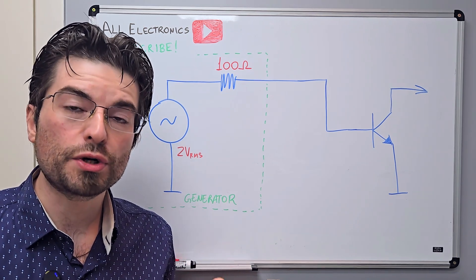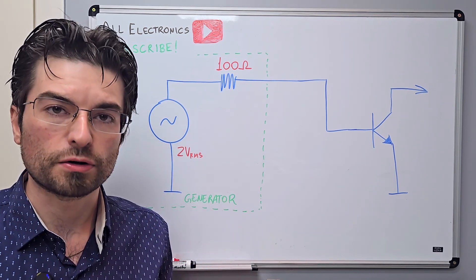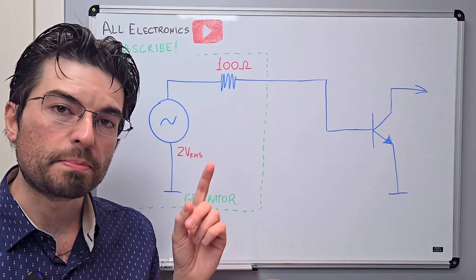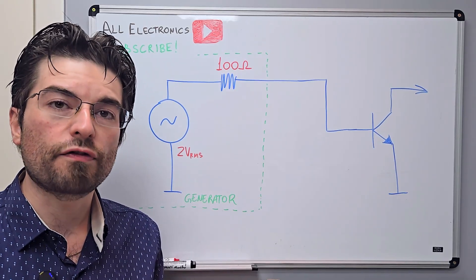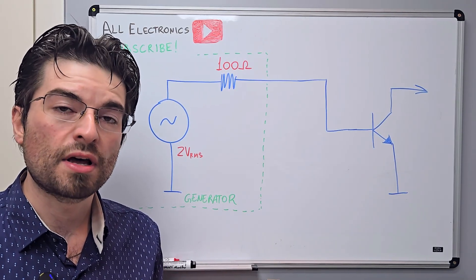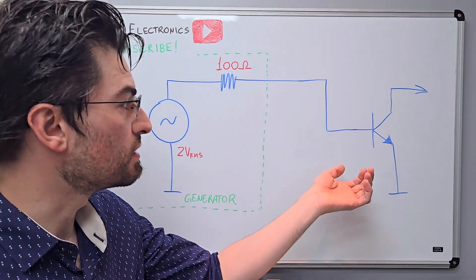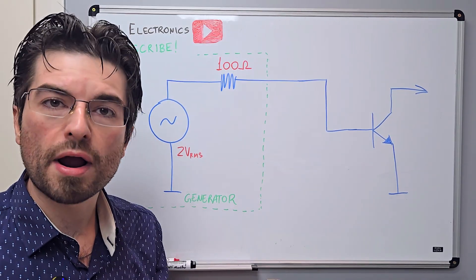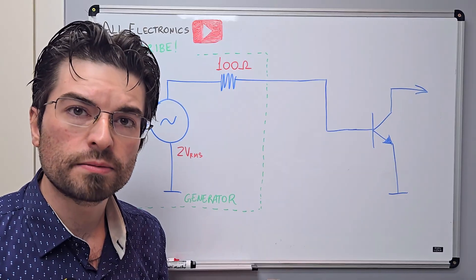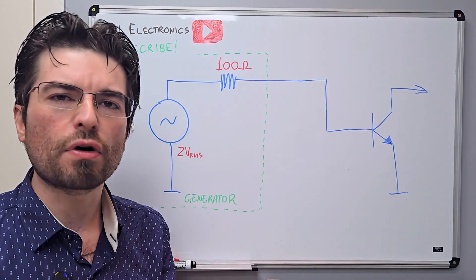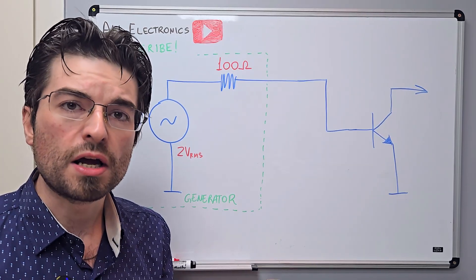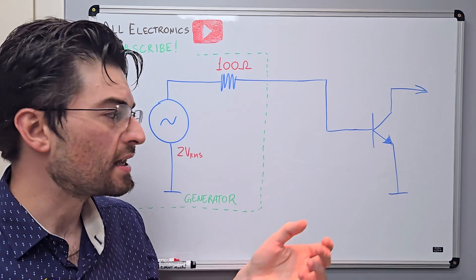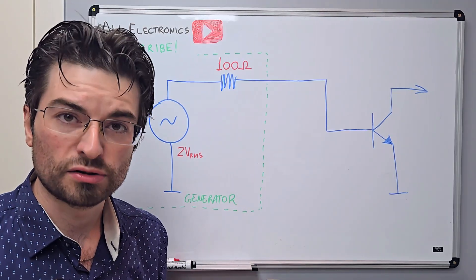Hey guys, welcome. I'm Greg. In this video we're gonna talk about impedance matching for transistors. We're gonna try to address a misconception about impedance matching that I receive a lot of questions and comments on — every time. Why do we need to impedance match a transistor to a source? And let's try to connect the behavior of impedance matching networks to the problem of the excitation voltage that a transistor perceives when connected to a generator.